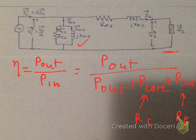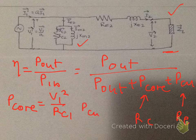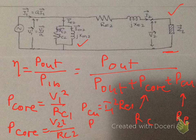Core loss is based on RC. Referred to the primary side, P_core = V1² / RC1. Referred to the secondary side, P_core = V2² / RC2. Copper loss is I²R: referred to the primary it is I1² × RE1, and referred to the secondary it is I2² × RE2. Pay attention to matching subscripts consistently.